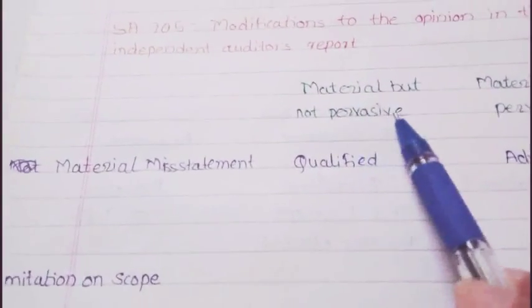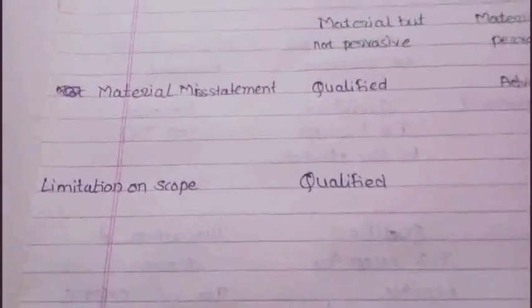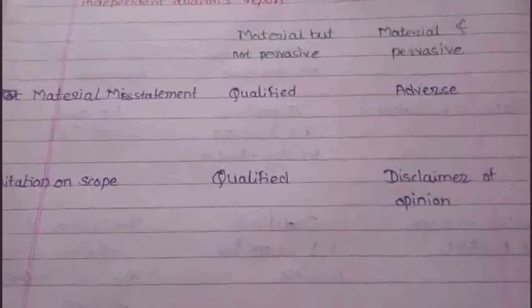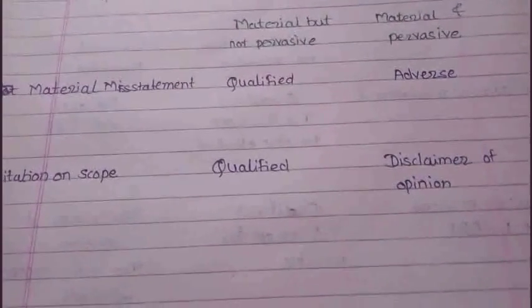For limitation on scope: if there is a limitation on scope and it is not pervasive — meaning it is affecting only one part of the financial statement — then it will be a qualified opinion. But if the limitation on scope is pervasive, affecting the whole financial statements, then it will be a disclaimer of opinion.